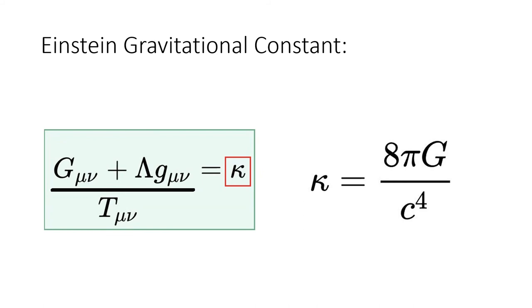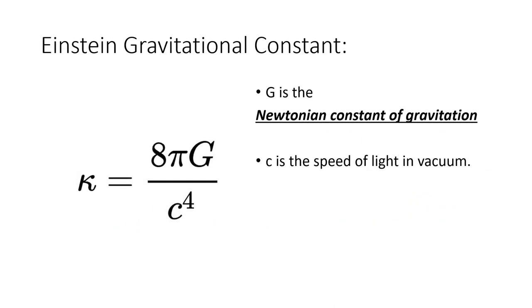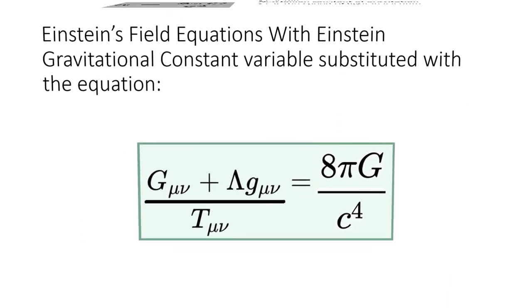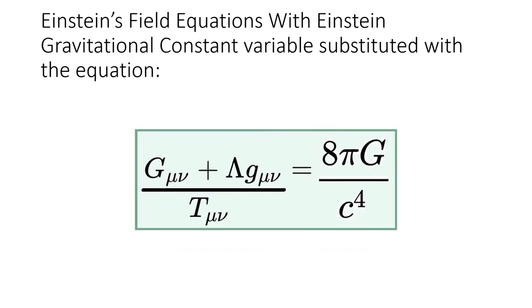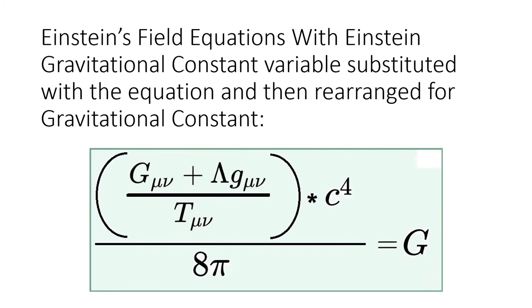Einstein gravitational constant. Here we have the Einstein gravitational constant term defined as its own equation. The Einstein gravitational constant is equal to 8 times pi times the Newtonian gravitational constant over the speed of light to the fourth power. Now we can substitute the Einstein gravitational constant for its formula. After substituting the Einstein gravitational formula for its constant, this equation can be rearranged again for the gravitational constant, also known as big G.